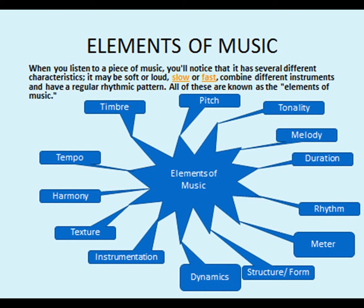Elements of music, first of all. When you listen to a piece of music, you will notice that it has several different characteristics — just like a personality, just like a movie that you may watch, just like a piece or a sculpture or a painting. It may be soft or loud, slow or fast, combine different instruments and have a regular rhythmic pattern. All of these are known as the elements of music.